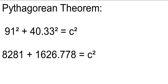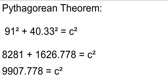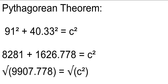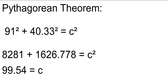91 squared is 8,281, and 40⅓ squared is 1,626.7 repeating. Add those numbers up and you get 9,907.7 repeating — we're just going to call it 9,907.778. This is equal to c squared. But in order to get c, we need to take the square root of 9,907.778, and when we do that, we find out that the hypotenuse of the triangle is around 99½ yards — 99.54 to be more precise. I'm rounding a little bit here.